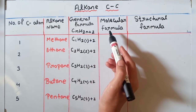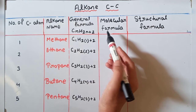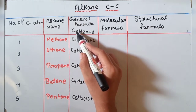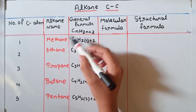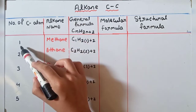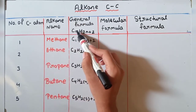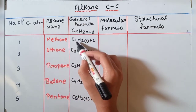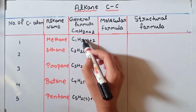General formula kya hoga alkane ka? That is CnH2n+2. Molecular formula kya hoga alkane ka? Yahan par dekhiye, n kya hoga — n is the number of carbon atoms. Number of carbon atom kitne hain methane mein? One.